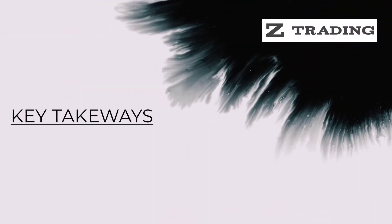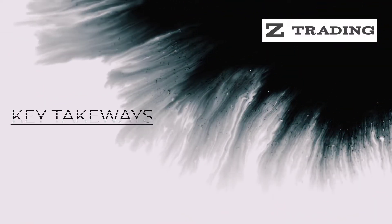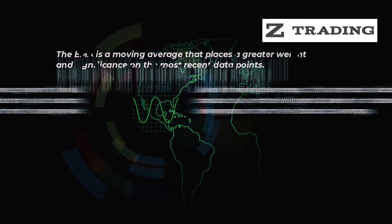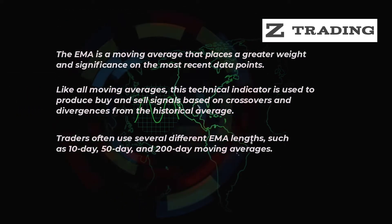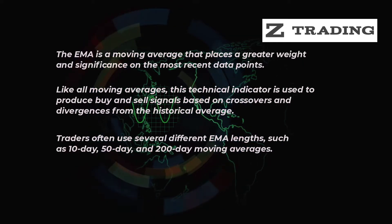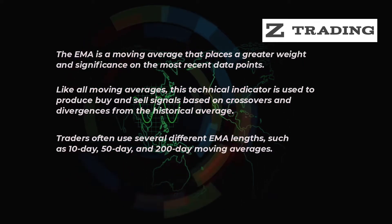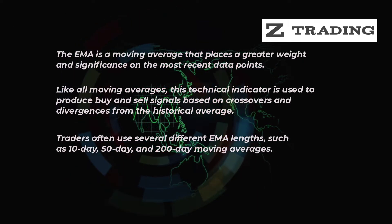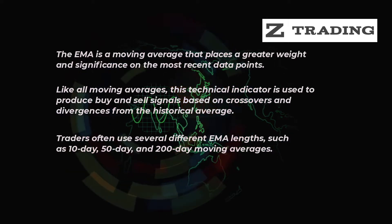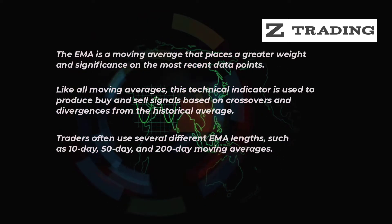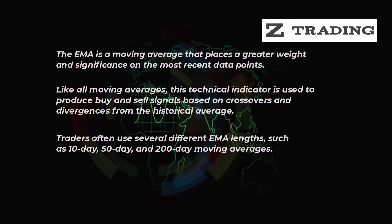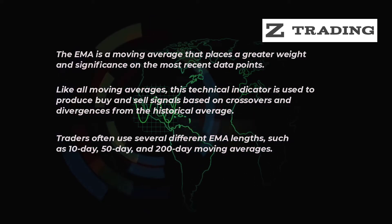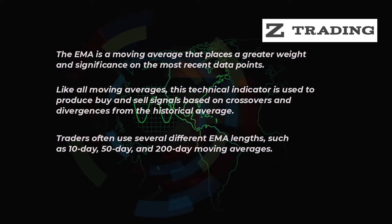Key Takeaways: The EMA is a moving average that places a greater weight and significance on the most recent data points. Like all moving averages, this technical indicator is used to produce buy and sell signals based on crossovers and divergences from the historical average. Traders often use several different EMA lengths, such as 10-day, 50-day, and 200-day moving averages.